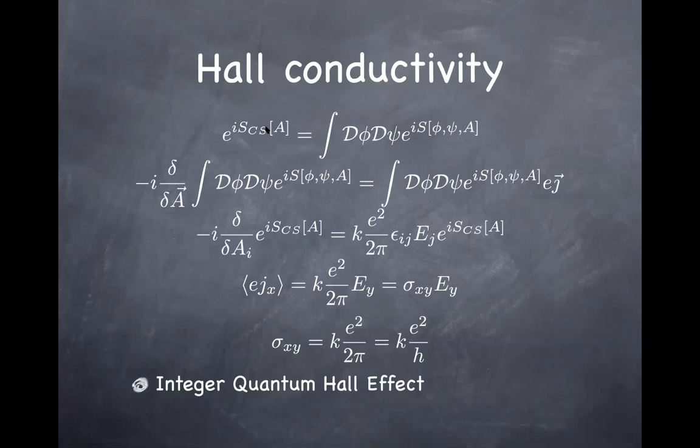The beauty of this discussion is that just this dimensional argument uniquely singles out the Chern-Simons term in the long-distance limit, which then uniquely leads to this quantized Hall conductivity. The rest of the discussion is why this k needs to be quantized from the requirement of gauge invariance.